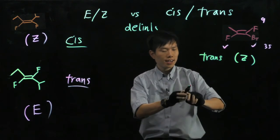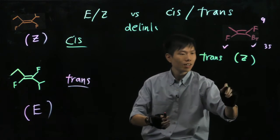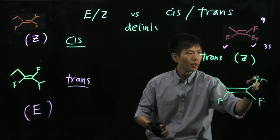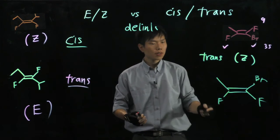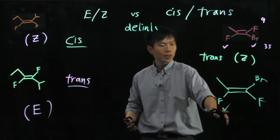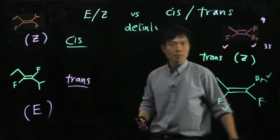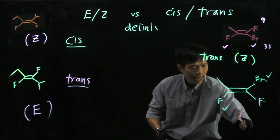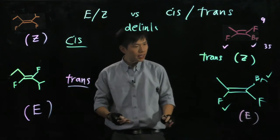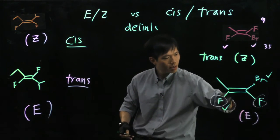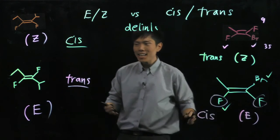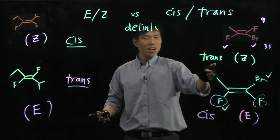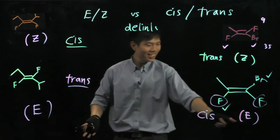Now if I draw another geometrical isomer of this molecule — same molecular formula but different structure — again I'm checking the high priority group: fluorine on one side, and Bromine on the other side. The high priority groups are on opposite sides, so that gives it an E isomer. But the fluorines are on the same side, so this is cis. You can see that a Z isomer could give you a cis, Z could also give you a trans, E can be a trans, and E can be a cis.